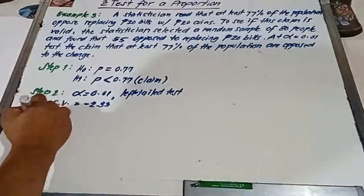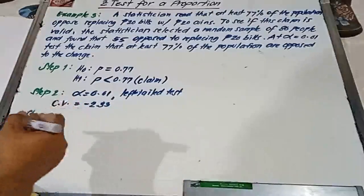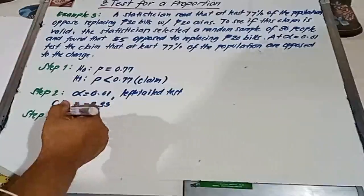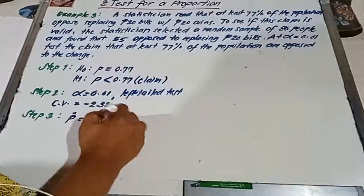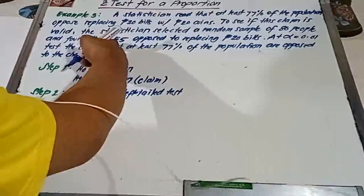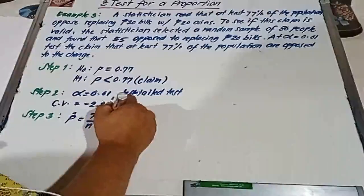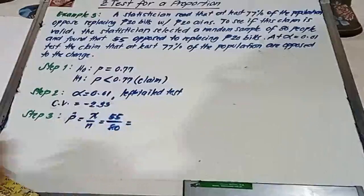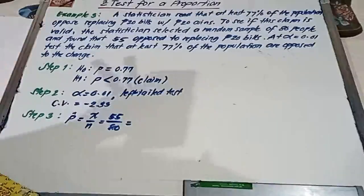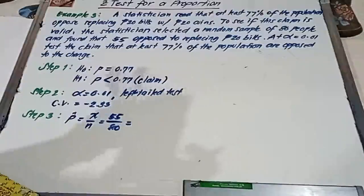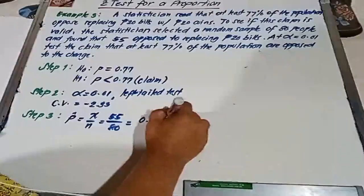Step number three, we compute our test value. But before that, let's get the sample proportion. Sample proportion is p-hat equal to x over n. 55 of 80 people oppose replacing 20 peso bills. So that is 55 divided by 80, and the quotient is equal to 0.6875.